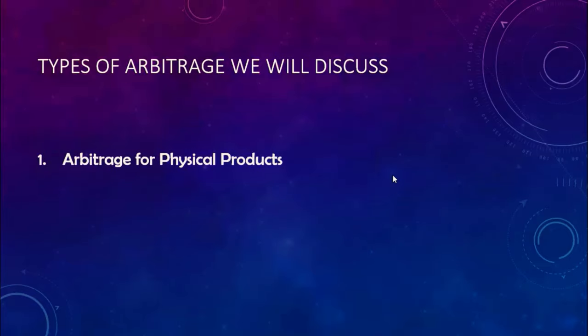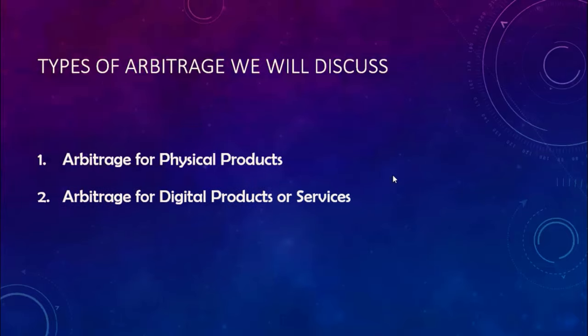Now let's see what types of arbitrage we will discuss. First, we will discuss arbitrage for physical products — like the iPhone example, but it can be any type of physical product, even shampoo. Then we will discuss arbitrage for digital products or services, which is a newer type of arbitrage that is getting more and more traction and can be a very lucrative business model.